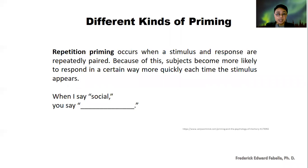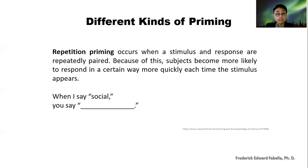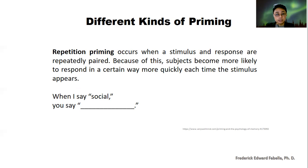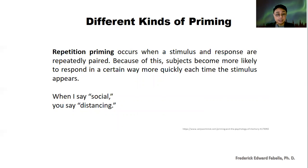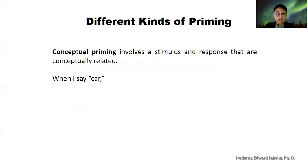Another type of priming is repetition priming, which occurs when a stimulus and response are repeatedly paired. Because of this, subjects become more likely to respond in a certain way more quickly each time the stimulus appears. For example, with the pandemic and the new normal, when I say social, you might say distancing — that is an example of repetition priming.